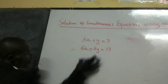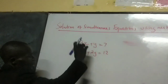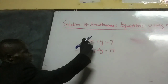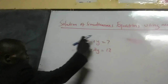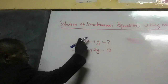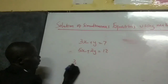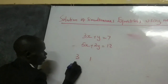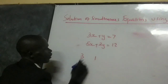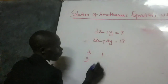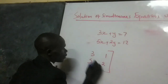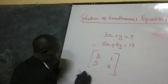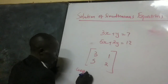The first thing we do, we extract the coefficients of the variables. The variables are x and y. The coefficient of x in the first equation is 3, the coefficient of y here is 1, the coefficient of x in the second equation is 5, and the coefficient of y here is 2. This gives us what we call the coefficient matrix.